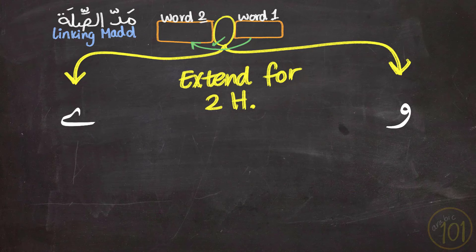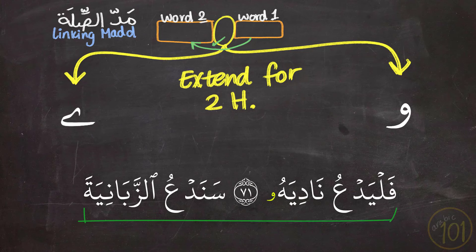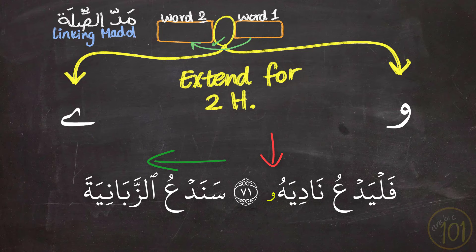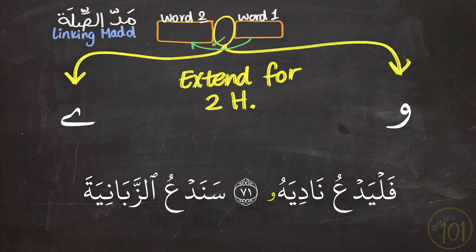One more example. Notice here, if we stopped at the end of the first word and then started at the following word, there won't be any Linking Mad. So there is no Linking Mad when you stop at the first word and start at the following word. Linking Mad is only there when you link up between the two words.